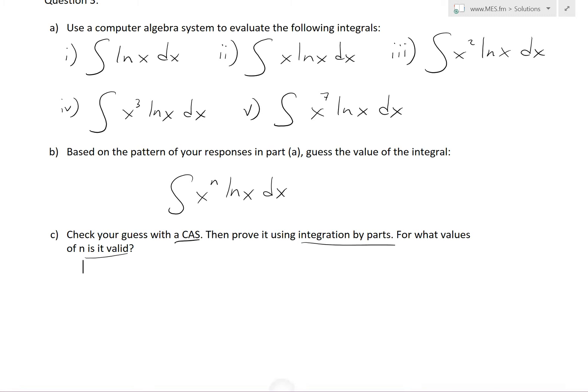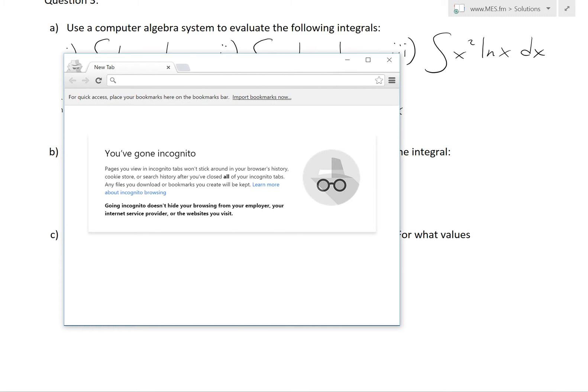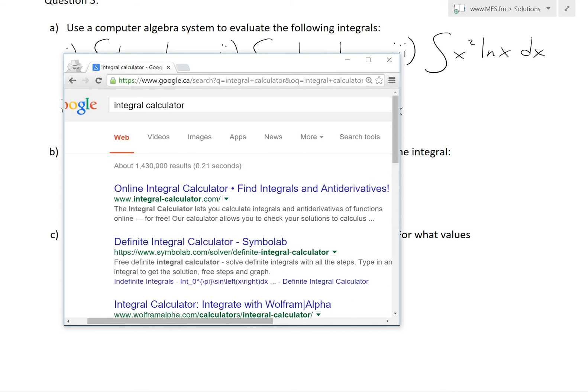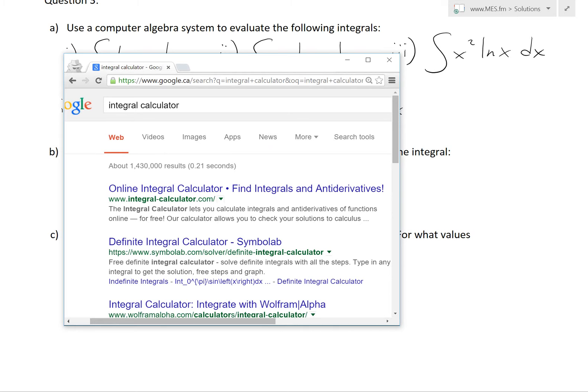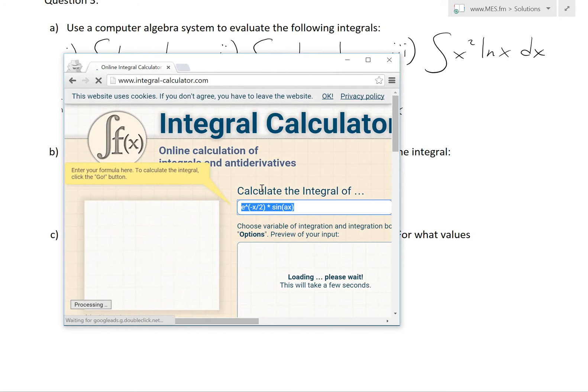So let's do part A, solve these using a CAS. Like always, you can just pop up the browser right here, and then you can Google integral calculator or derivative calculator if you're using derivatives, etc. And they all use online CAS or computer algebra systems.